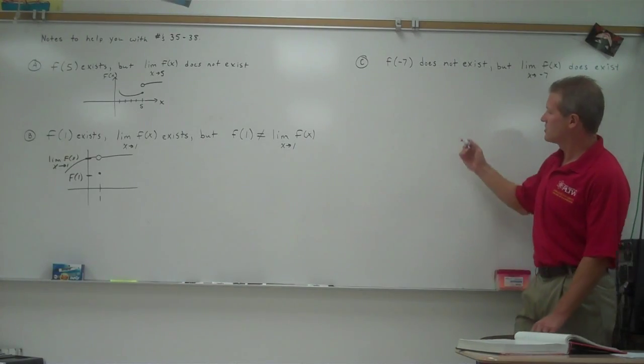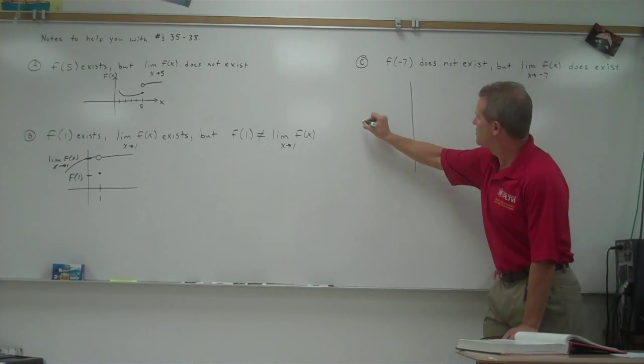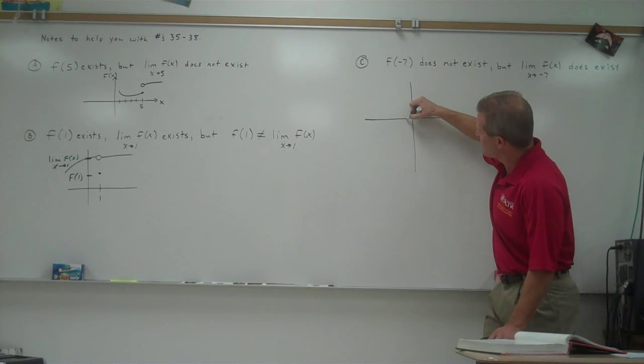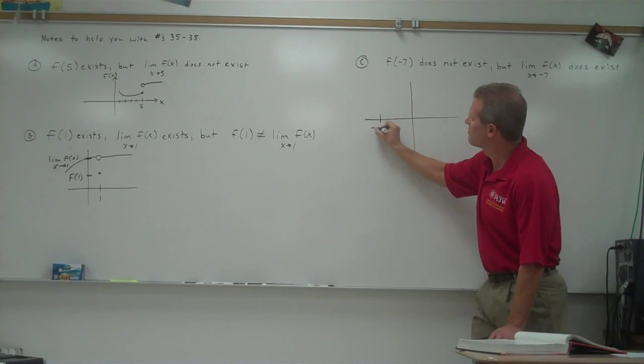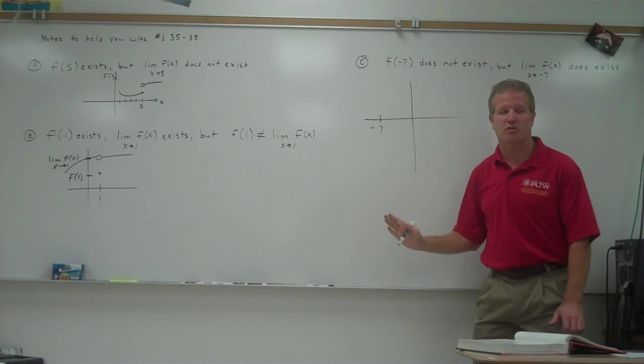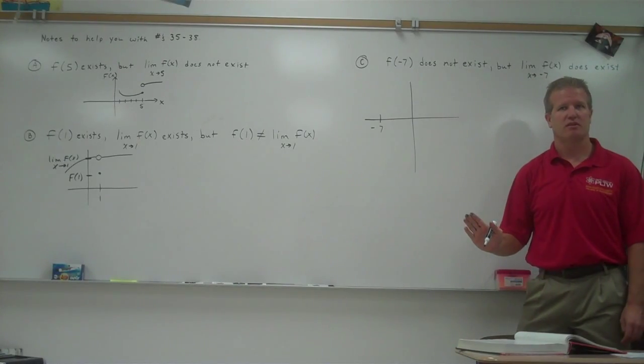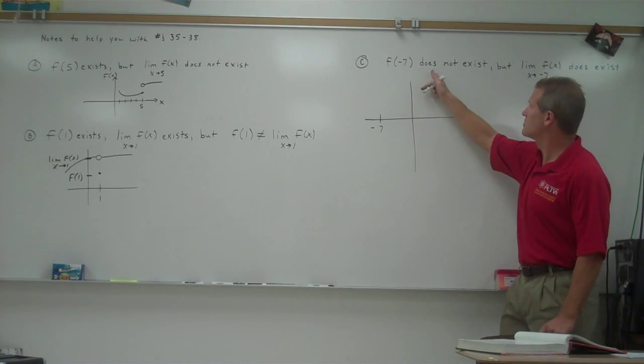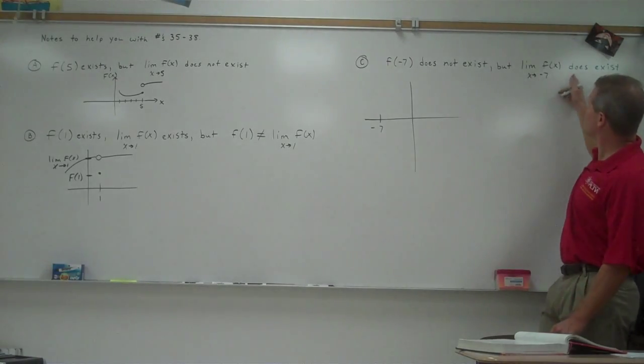f of negative 7 does not exist. So what that means is that if I'm at negative 7, let's say it's out here somewhere, there is no point above or below that x-coordinate. x cannot equal negative 7. That's what that means. But the limit does exist.